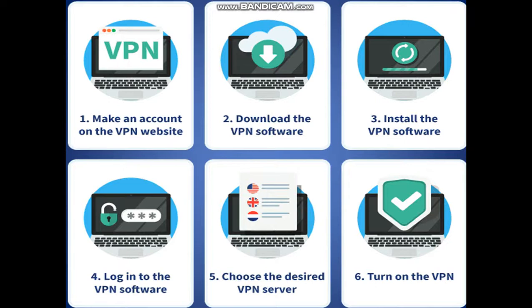Now I'm going to tell you how to set up a VPN. First, you have to make an account on the VPN website. Then download the VPN software, install it, login to the VPN software, choose the desired VPN server, and turn on the VPN. There are two types of VPN: free and paid. I prefer you use the free version. You can use Proton VPN, which is the best free VPN at this moment. The biggest advantage is that there is no data limit. I have provided a link in the description box, you can click and go to the website.